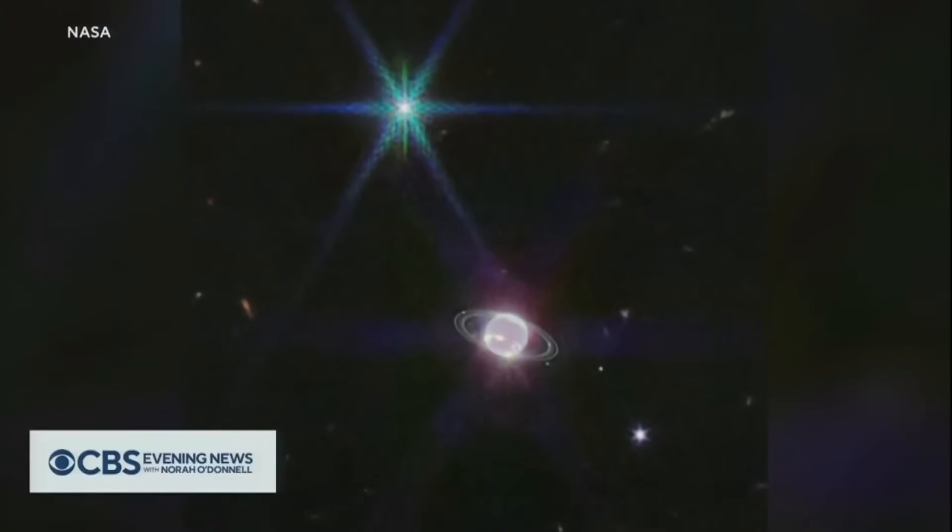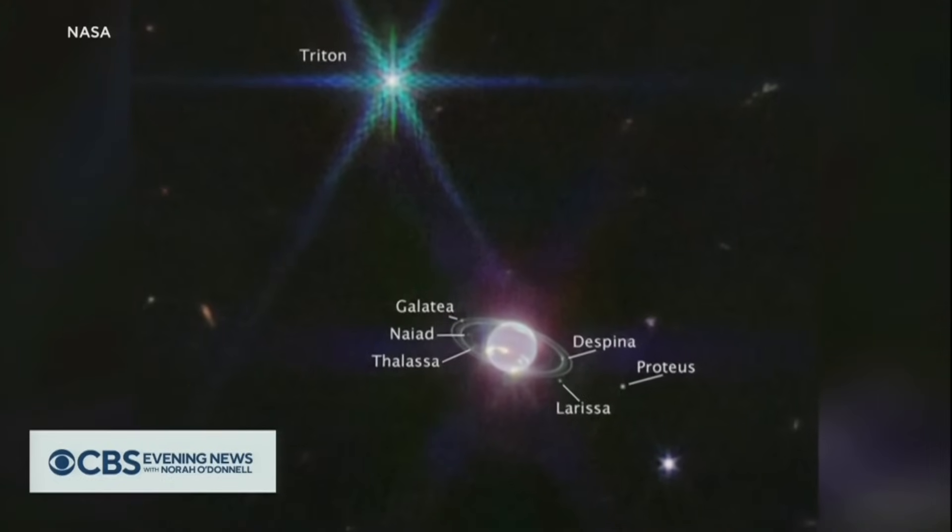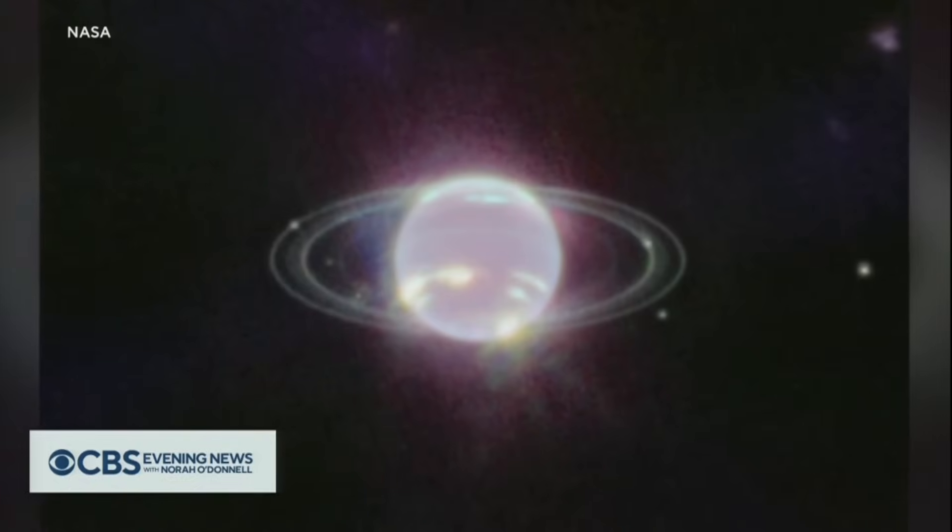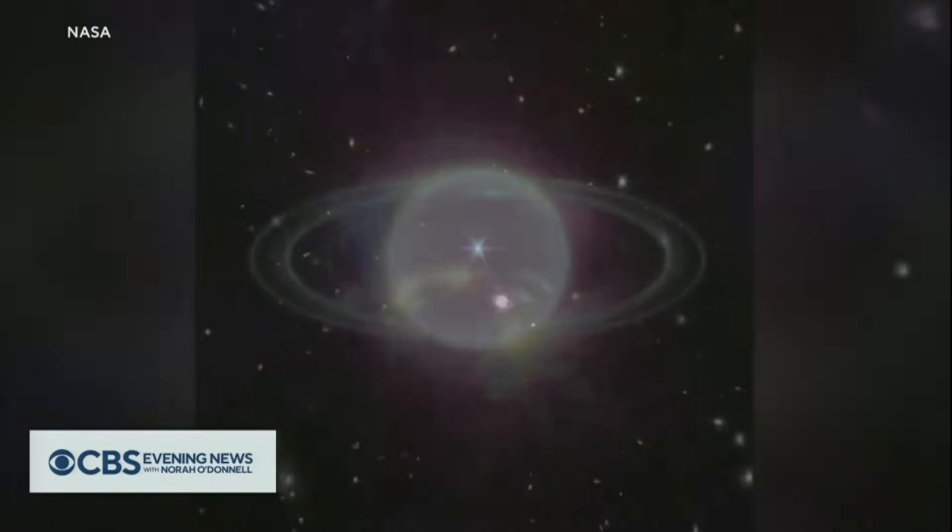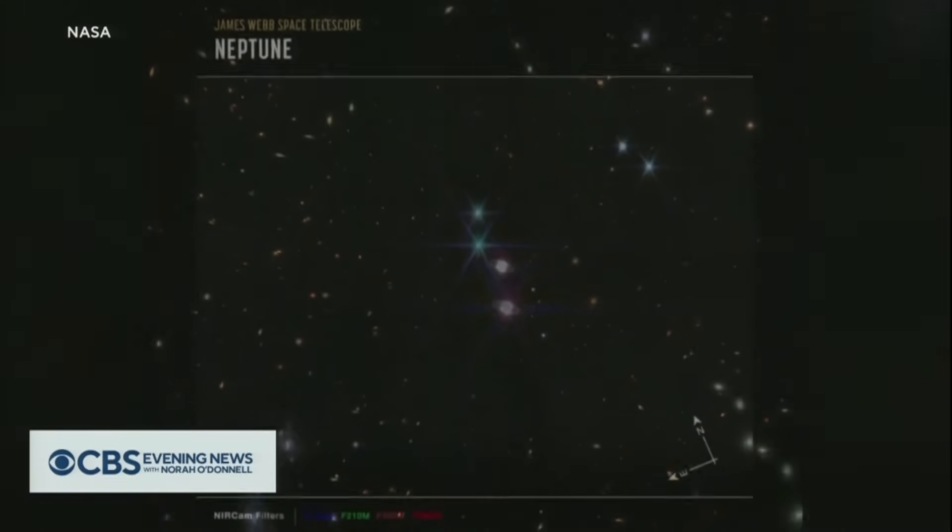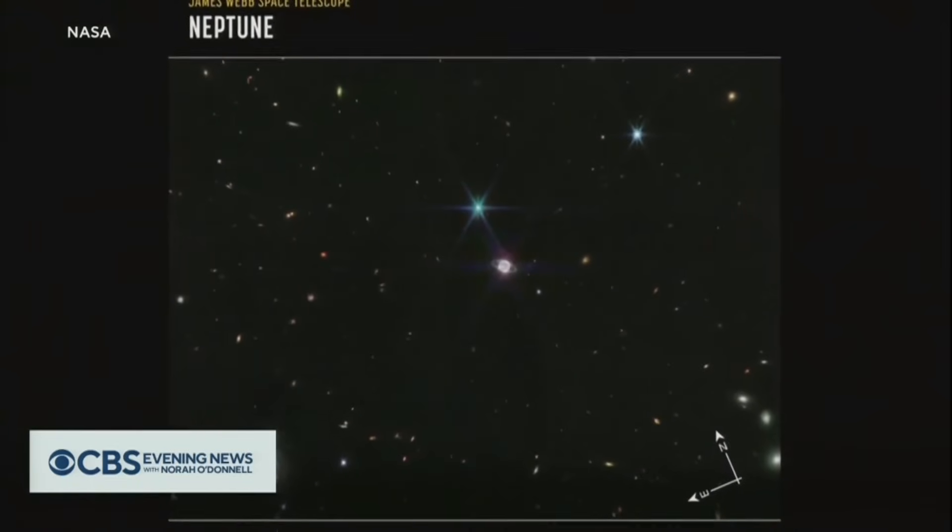We end tonight with the clearest pictures yet of Neptune, the most distant planet in our solar system. The striking infrared images were taken this summer by the James Webb Space Telescope. They show Neptune's thin rings, faint dust bands, and 14 moons. It's the sharpest view we've had of Neptune since Voyager 2 zoomed past the giant ice planet in 1989.